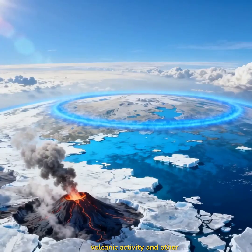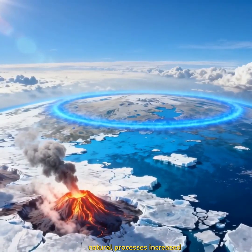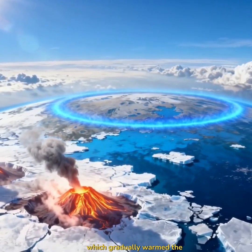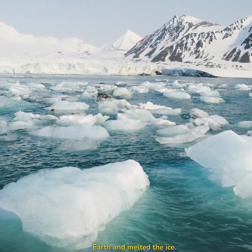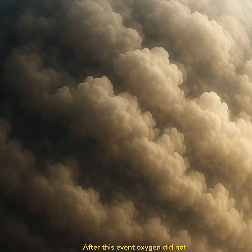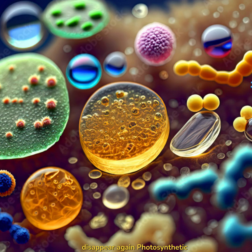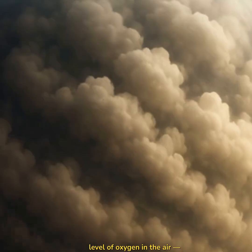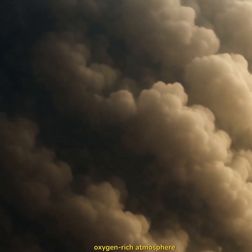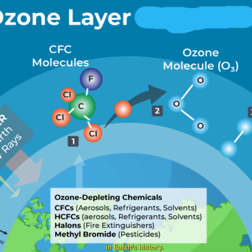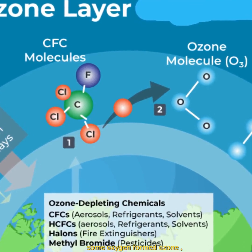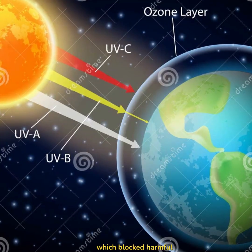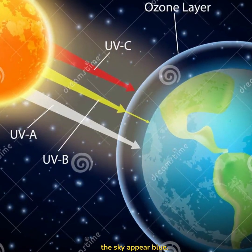Over time, volcanic activity and other natural processes increased greenhouse gases, which gradually warmed the Earth and melted the ice. After this event, oxygen did not disappear again. Photosynthetic microbes kept producing it, while other natural reactions consumed part of it, leading to a low but stable level of oxygen in the air — the first long-lasting oxygen-rich atmosphere in Earth's history. In the upper atmosphere, some oxygen formed ozone, which blocked harmful ultraviolet radiation and made the sky appear blue.